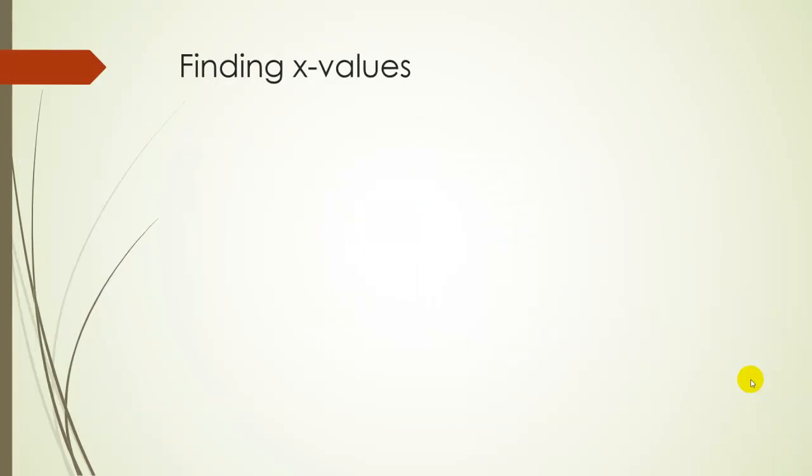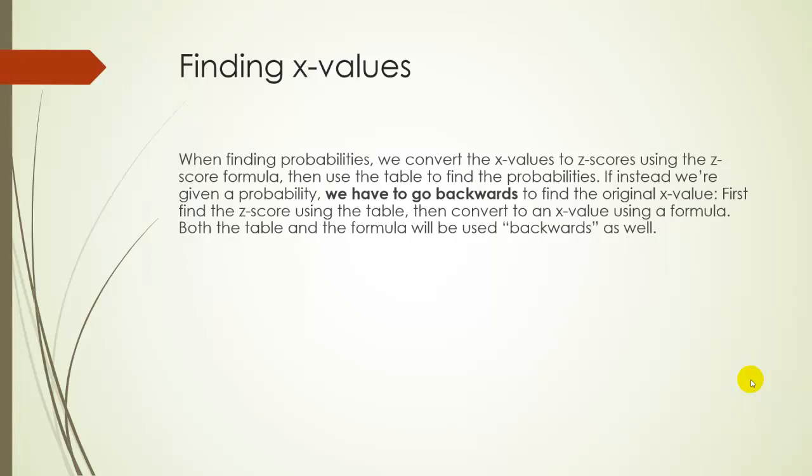Suppose instead we're given a probability, and we want to find an x value. And what we're going to do is we're going to do the entire procedure exactly backwards. I know that sounds a little weird, but that's what we're going to do. So our formula for our z-score was x minus μ over σ. So we're going to have to use the formula backwards. We're going to do everything backwards. In other words, before we started off with the x value, from that we used a formula to get a z. And from the z, we looked it up on a table to get the probability. So we're going to have to use the table to get the z values, and then use the formula backwards from the z values to get the x values.